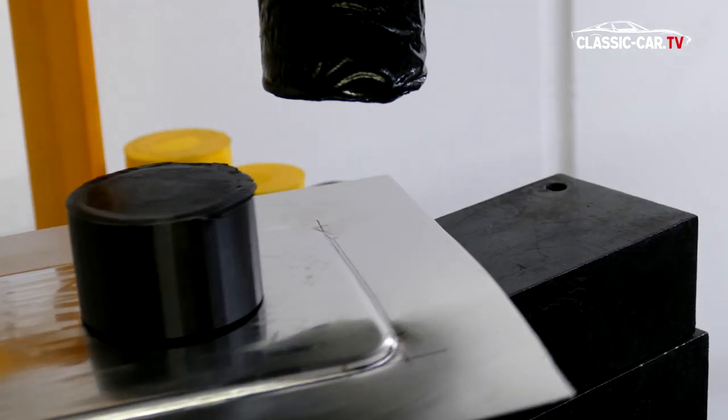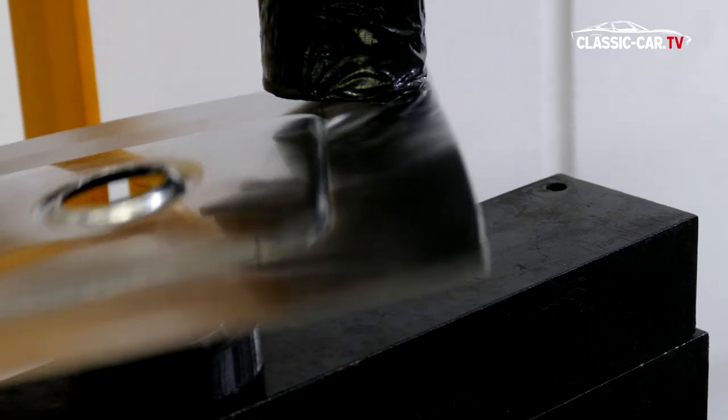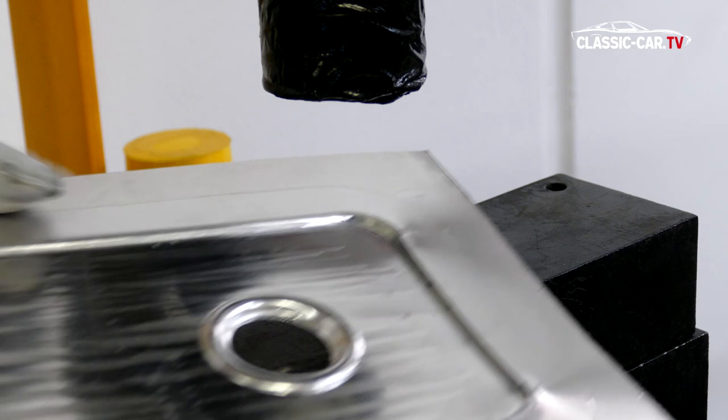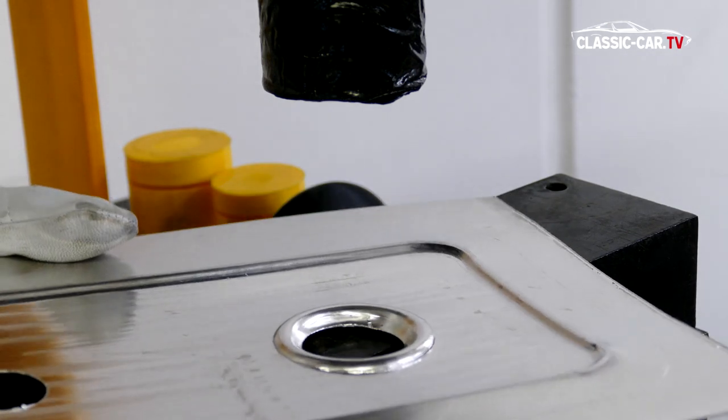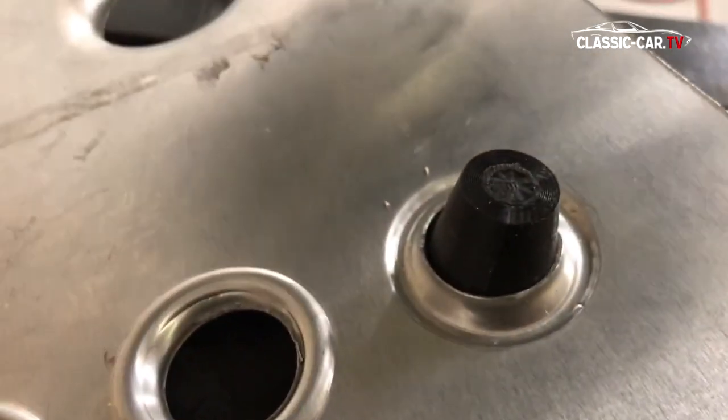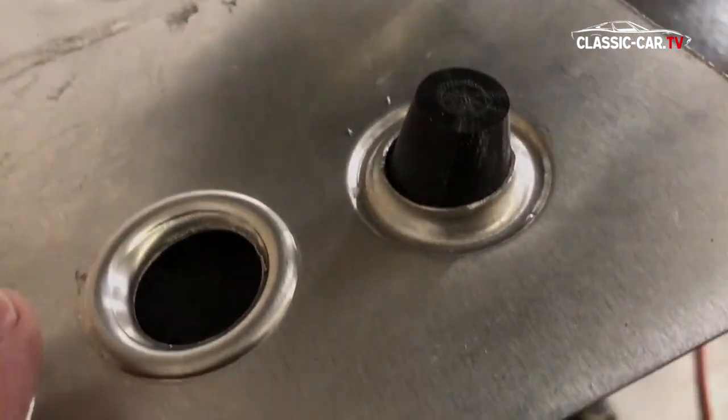If you separate the tool halves now, you can see the raised circular bead around the pressed bead hole. Such beads can be made in different sizes.